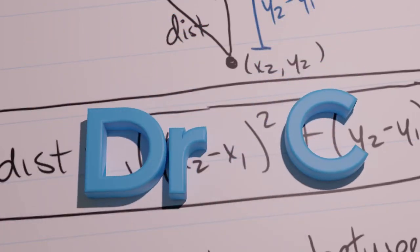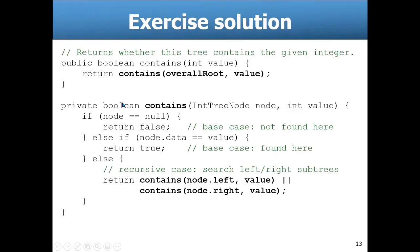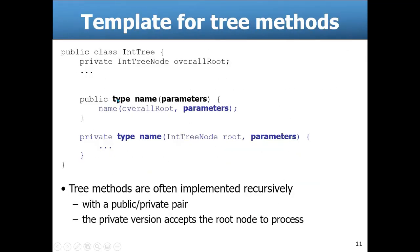In these recursive methods where there's a public-private pair, the template's always the same. The public one is obviously public — whatever return type is here, the name of the method and the parameters. That's the public version.